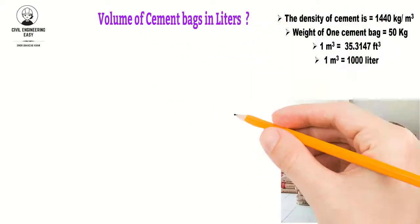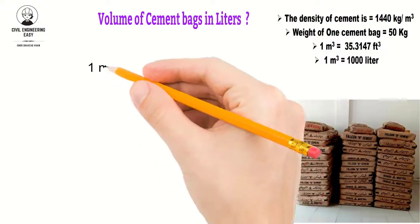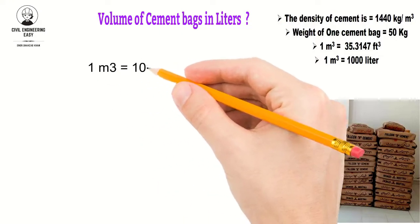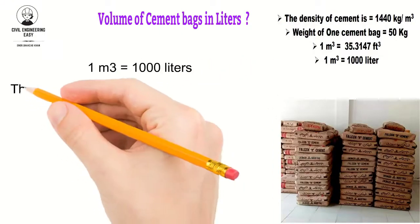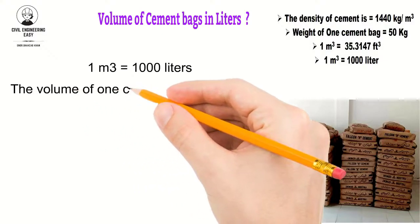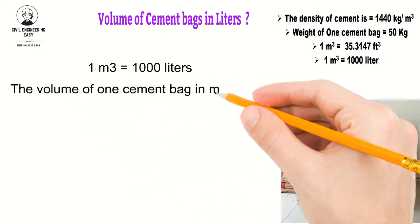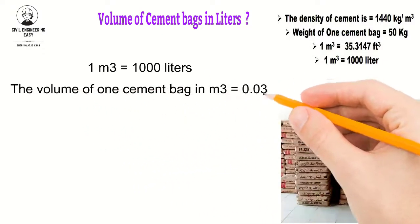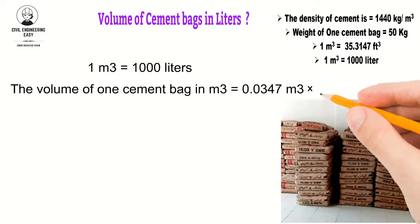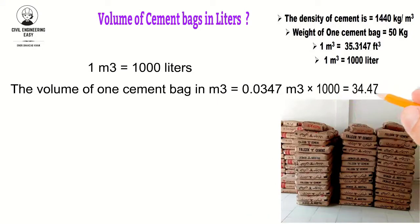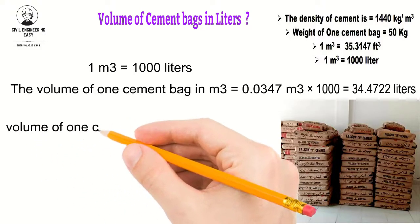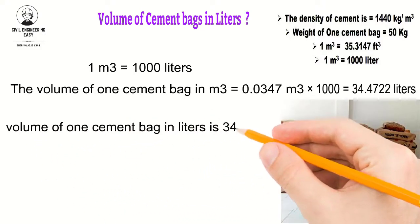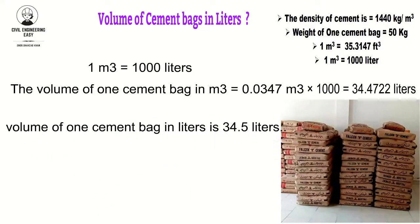Now for the last calculation — the volume of one cement bag in liters. Since one cubic meter equals 1000 liters, and we derived that the volume of one cement bag in cubic meters is 0.0347 m³, multiplying by 1000 gives us 34.722 liters. Therefore, the volume of one cement bag in liters is approximately 34.5 liters.